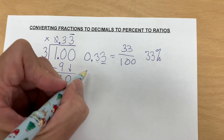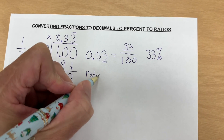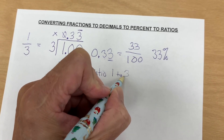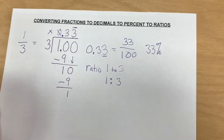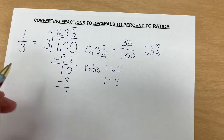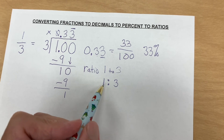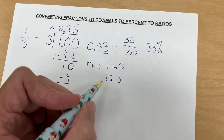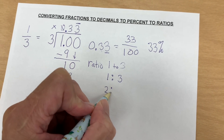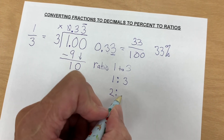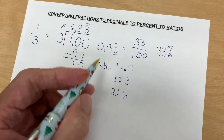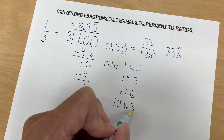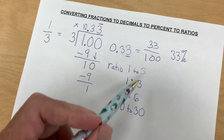And the last piece is the ratio. The ratio is one to three — or one colon three. And to make equivalent ratios, we just need to multiply the numerator and the denominator by the same number. So 1 times 2 is 2, 3 times 2 is 6; 1 times 10 is 10, 3 times 10 is 30. And these are all equal to 1 to 3.